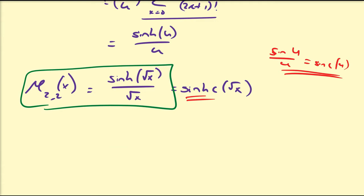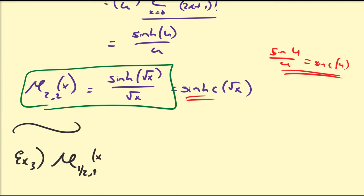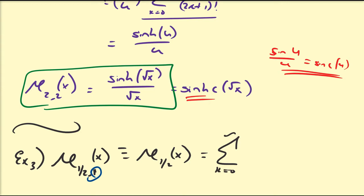We've been choosing integer parameters, but of course we can also use fractions or rational numbers. For example, let's consider E_{1/2, 1}(x), which is the same as the one-parameter E_{1/2}(x). This is the sum from k=0 to infinity of x^k over Gamma(k/2 + 1).